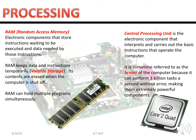CPU stands for central processing unit. It interprets and carries out the basic instructions that operate the computer — it is essentially the brain of the computer, and it can perform more than 3 billion tasks without error. It is one of the most important parts of your system unit. Examples include Intel i7, Intel i5, Intel i3, and AMD.